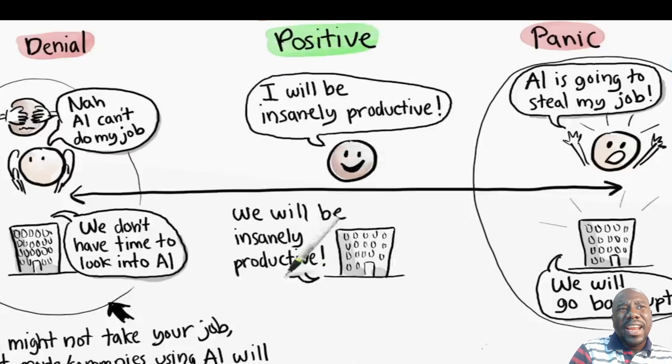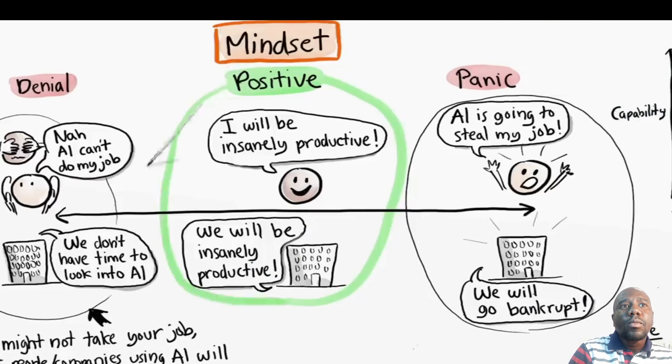I propose a middle ground, a balanced, positive mindset: AI is going to make me, my team, my company insanely productive. Personally, with this mindset, I feel like I've gained superpowers. I can go from idea to result in much shorter time. I can focus more on what I want to achieve and less on the groundwork of building things. And I'm learning a lot faster too.